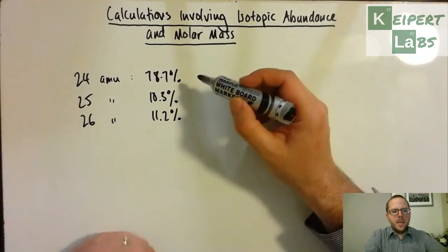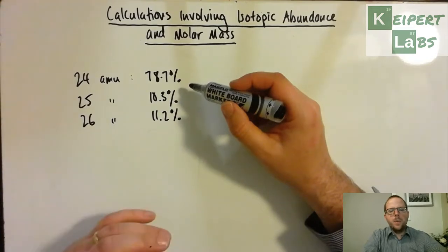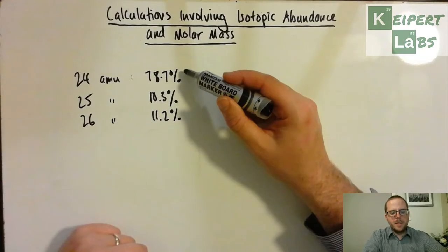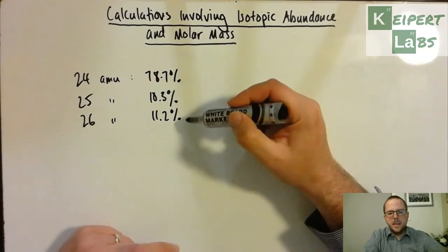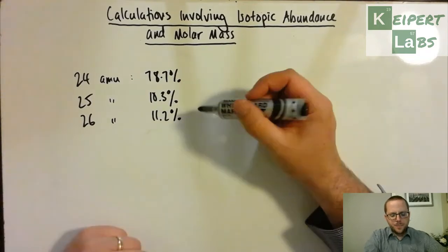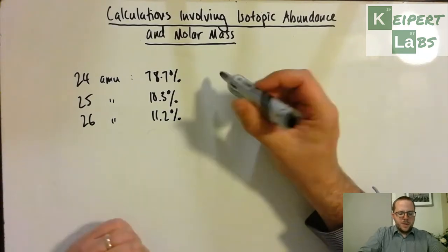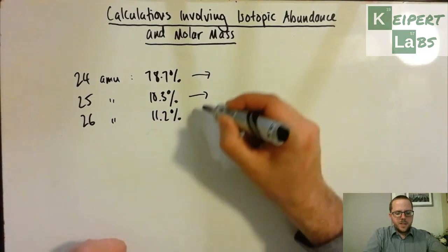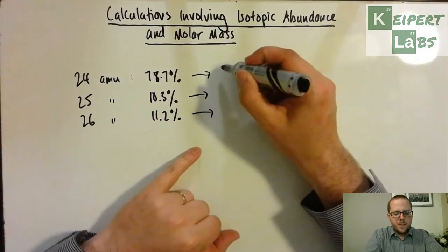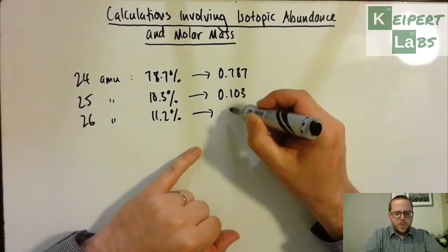Now one thing that for starters that we can work out is that the average molar mass is going to be somewhere between 24 and 26. That's the first kind of gut feeling that you can actually work out where that must fall. Now the easiest way to do this is to convert each of these percentage values out to a decimal: 0.787, 0.103 and 0.112.